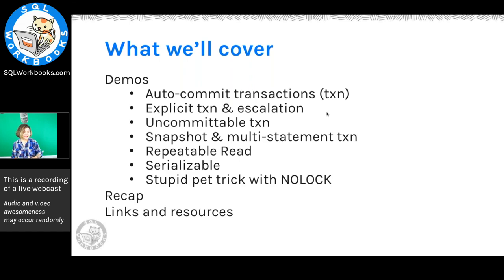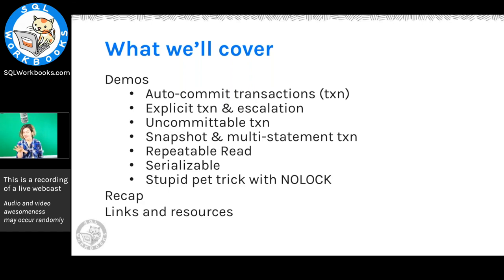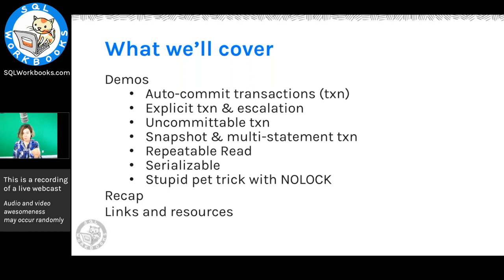Today we're going to dig through demos covering: different kinds of transactions and why you should care; what isolation level escalation is and why you should care; what an uncommittable transaction is and why that's a good thing; snapshot isolation and multi-statement transactions; and the other two isolation levels — there are three: snapshot, repeatable read, and serializable. We'll see demos of why you might want repeatable read and serializable, and then close with a stupid pet trick and a recap.